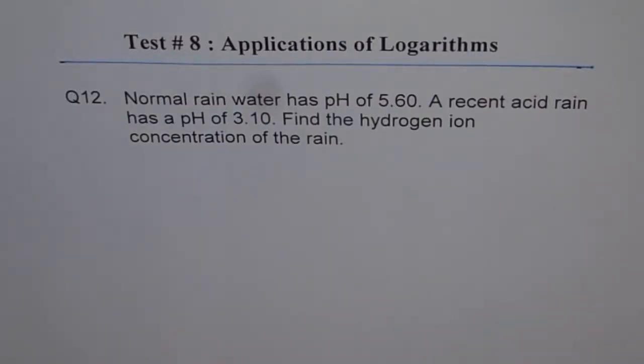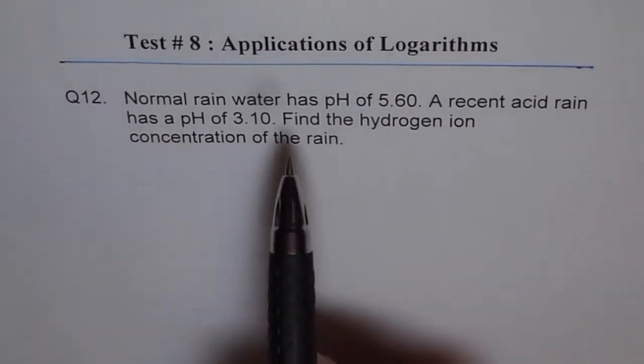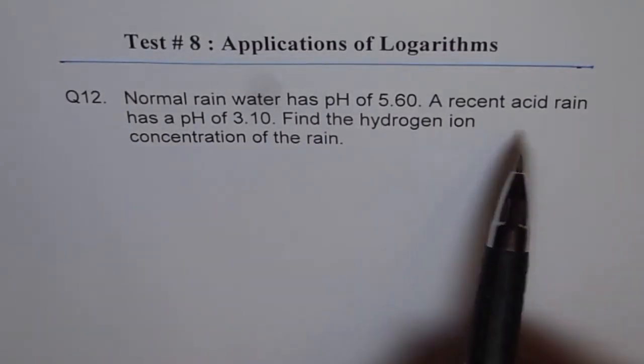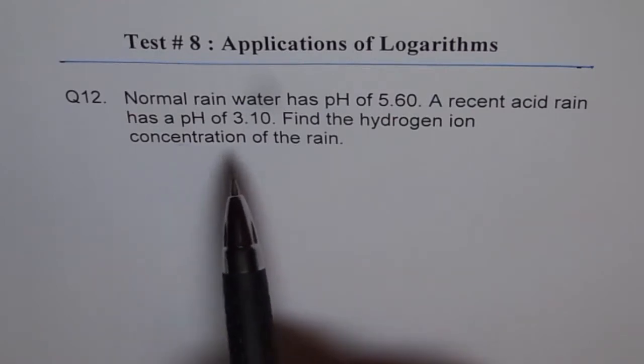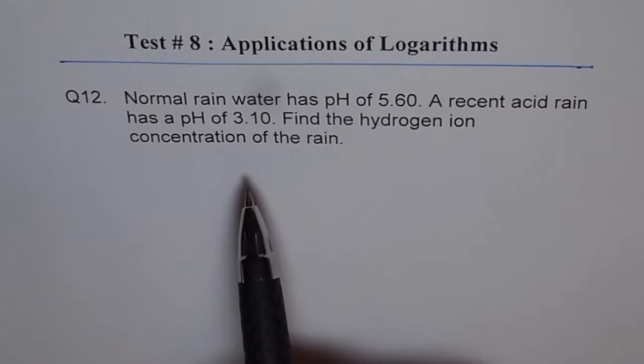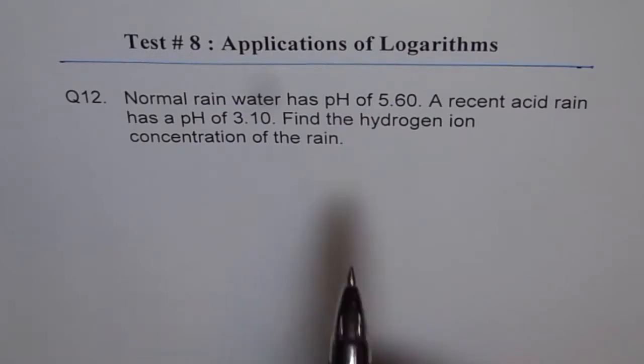Question 12 on applications of logarithms. Normal rainwater has pH of 5.60. A recent acid rain has a pH of 3.10. Find the hydrogen ion concentration of the rainwater.